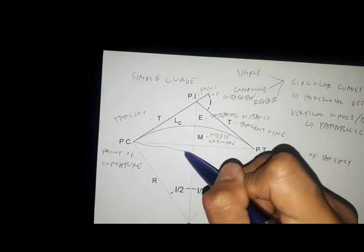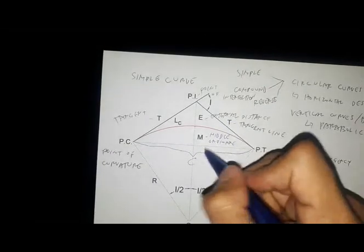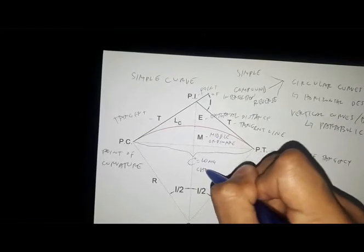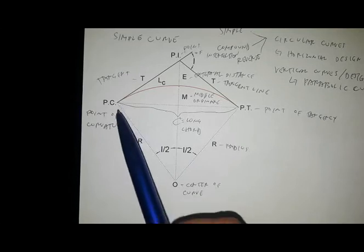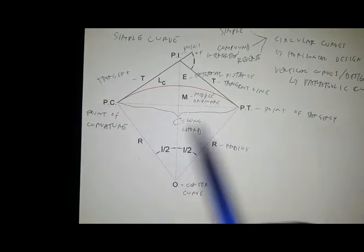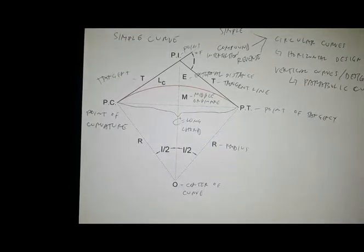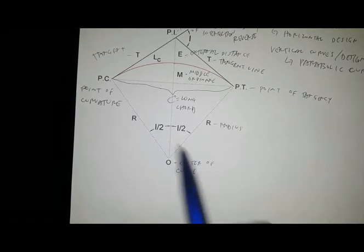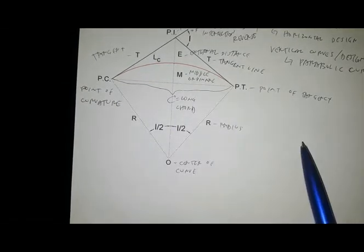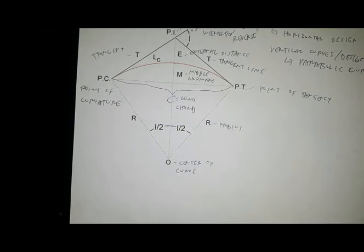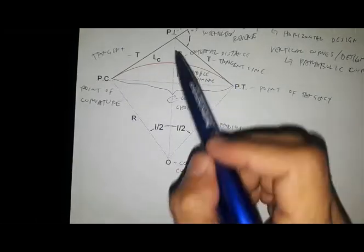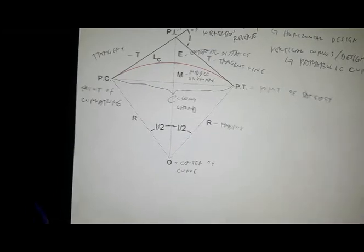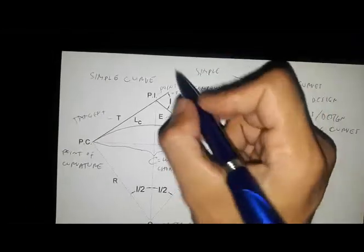This curve is your C, or the long chord. Simple curve is the most common curve generally used for railroad and highway construction. Simple curve also uses the geometric properties of the circle. Let's try to derive all the formulas for the elements of the curve. This is your central angle I.